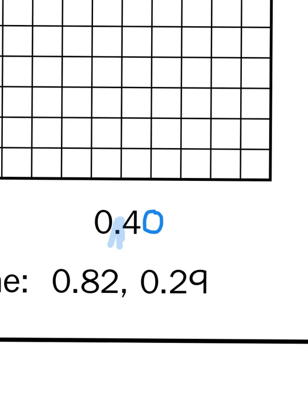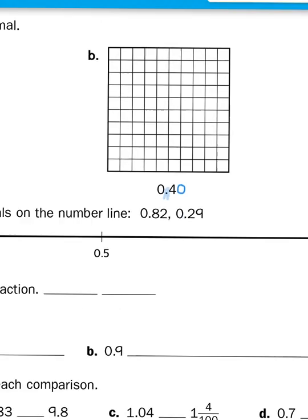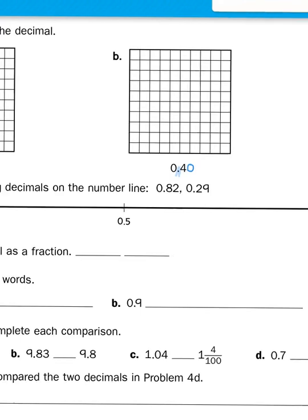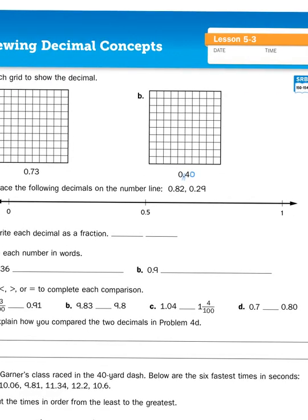A zero is a placeholder, so 4 tenths can also be thought of as 40 hundredths. Four dimes is the same amount of money as 40 pennies. So when you are comparing fractions that have unlike denominators, you have to think about converting them to like denominators. Same thing with decimals. When you're comparing two decimals that have different numbers of place values behind the decimal point, it's helpful to compare apples to apples.